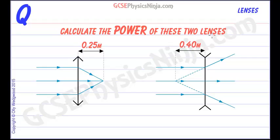Calculate the power of these two lenses. In the first case we have a convex lens, this is the symbol for a convex or converging lens.